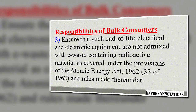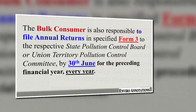The third responsibility is to ensure that end-of-life electrical and electronic equipment are not admixed with e-waste containing radioactive material as covered under the provisions of the Atomic Energy Act 1962 and rules made thereunder. Another responsibility is to file annual returns in the specified Form 3 to the State Pollution Control Board or Union Territory Pollution Control Committee on or before the 30th day of June for the preceding financial year.